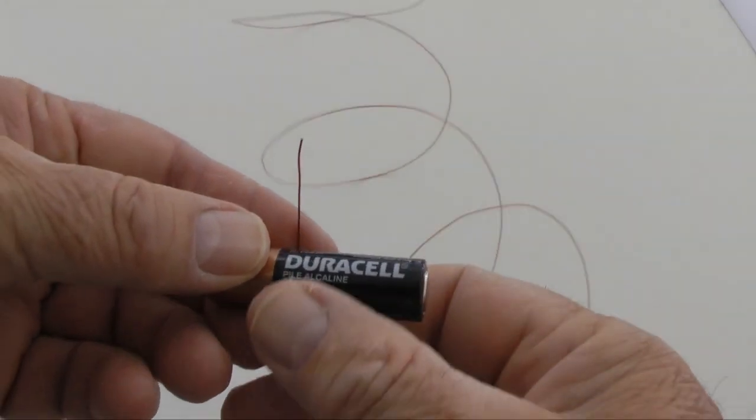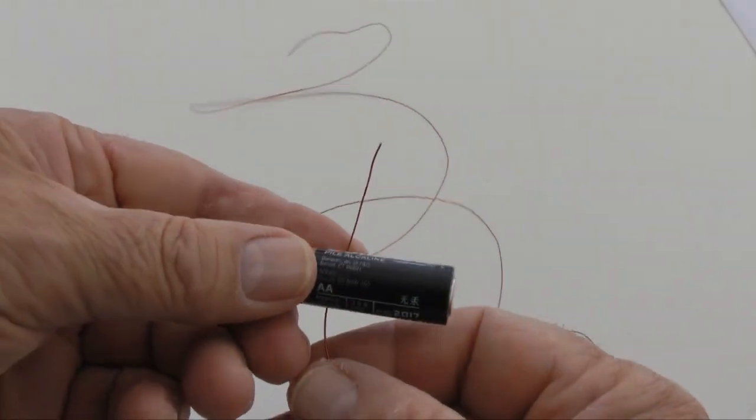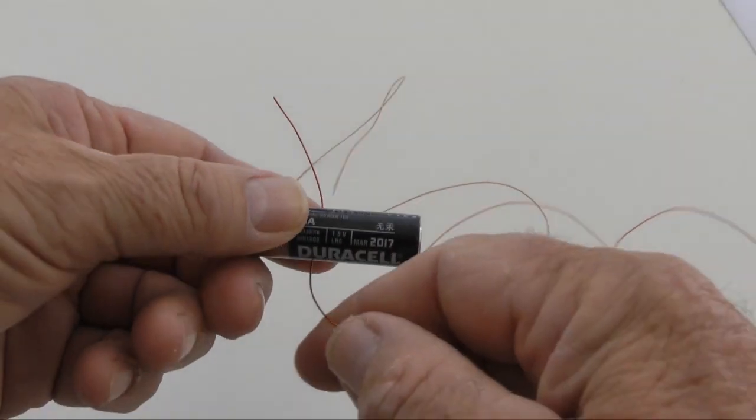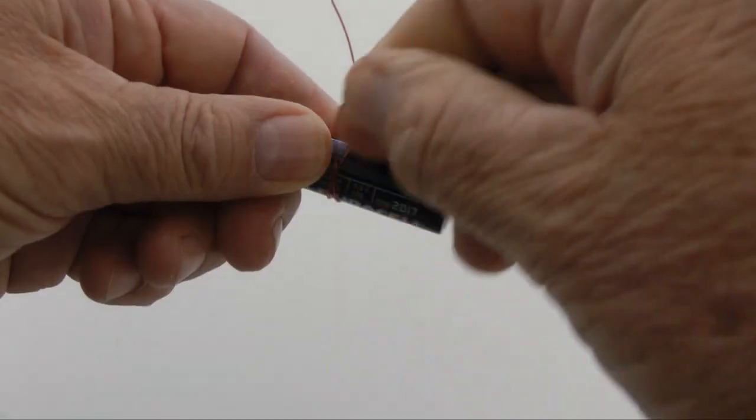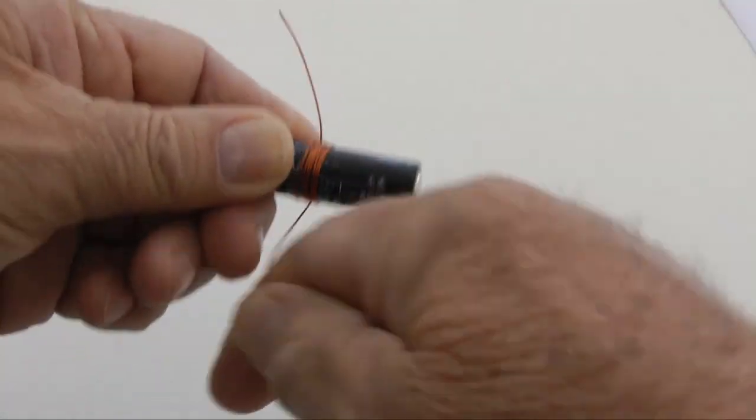To create the coil, wrap the magnet wire onto a AA battery. Wind a tight coil. Leave both ends of the wire exposed, about 4 centimeters.